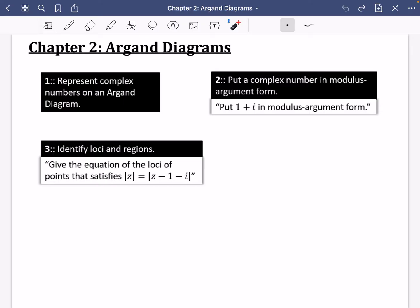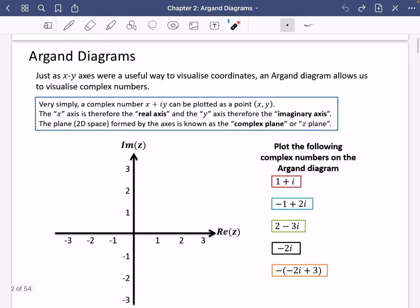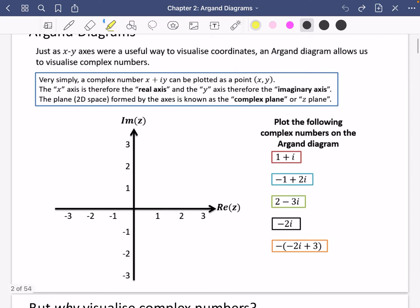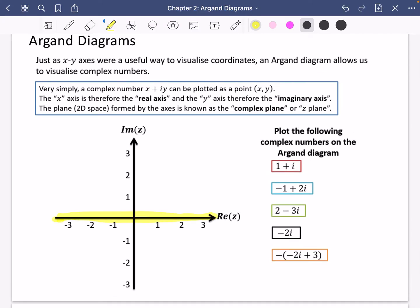So let's get started and try and answer what is an Argand diagram. An Argand diagram, just as x-y axes were a useful way to visualize coordinates, allows us to visualize complex numbers. Normally when we think about numbers without this imaginary axis, we think about a number line. What happens with an Argand diagram is to add in the imaginary numbers, we add in this additional axis, which is sort of like the y-axis.